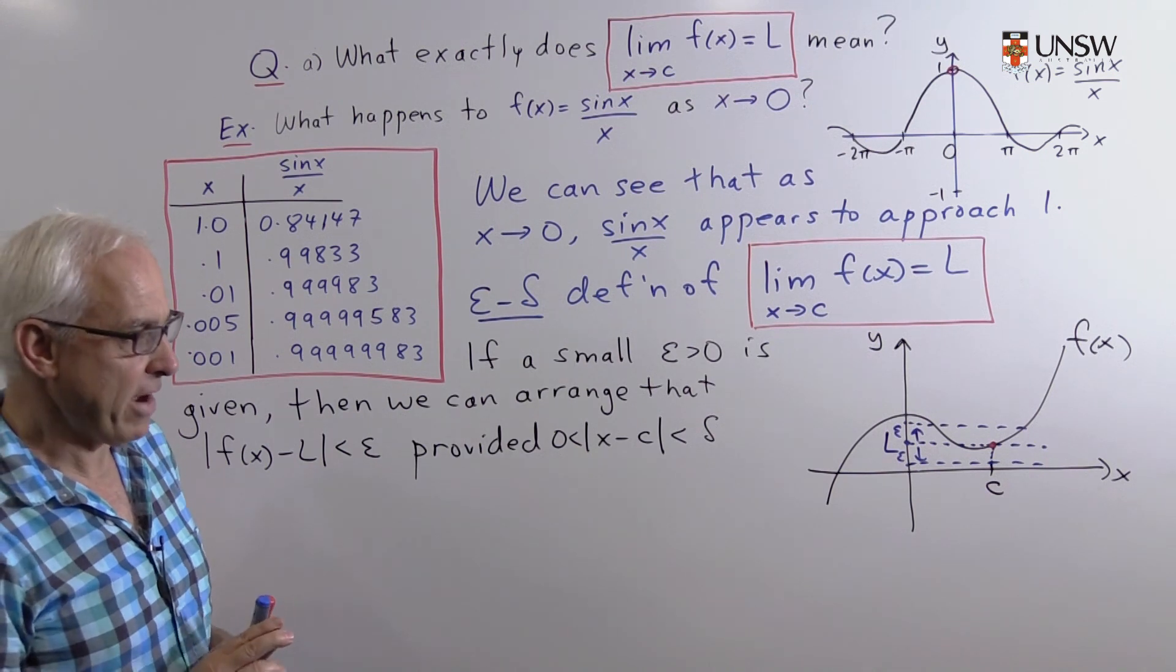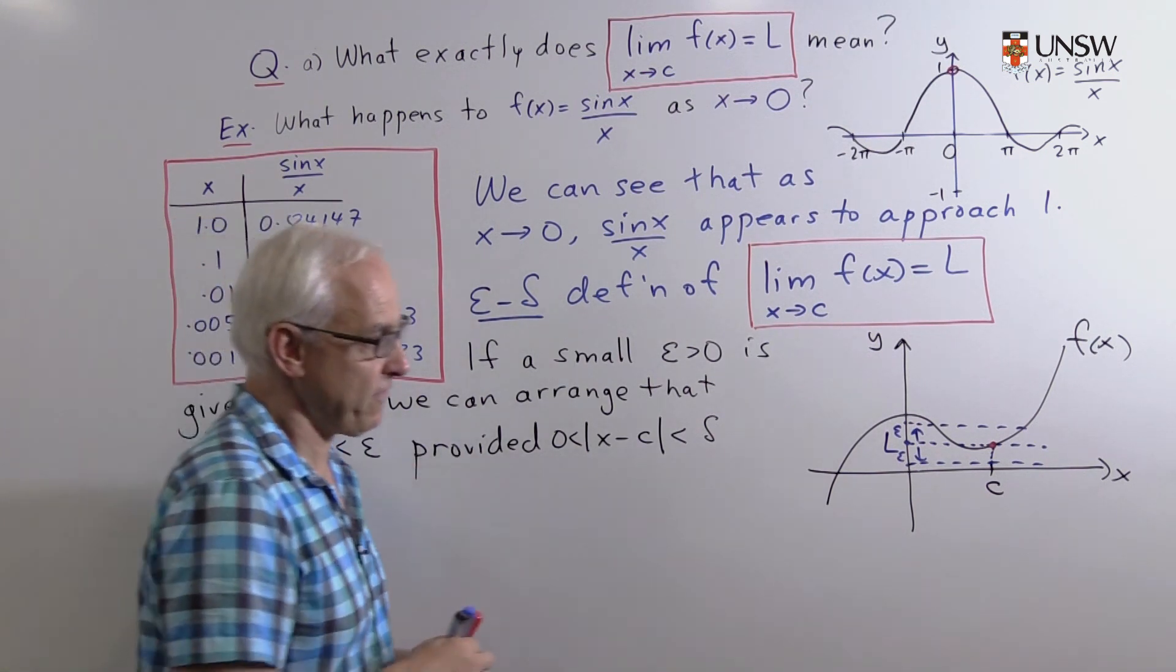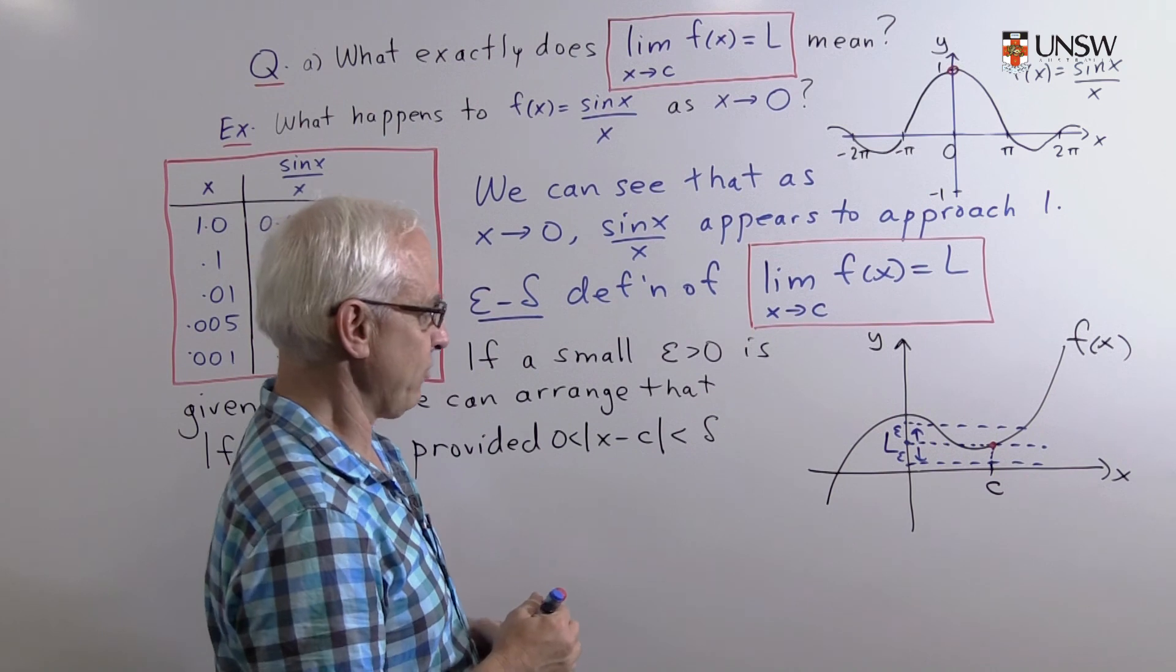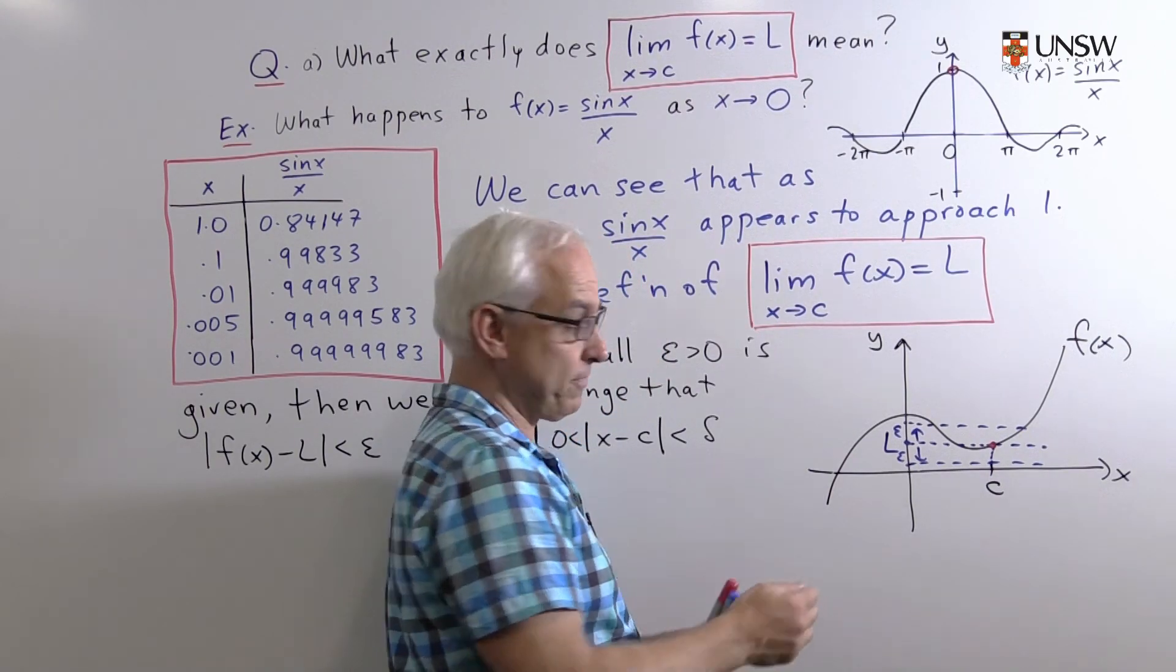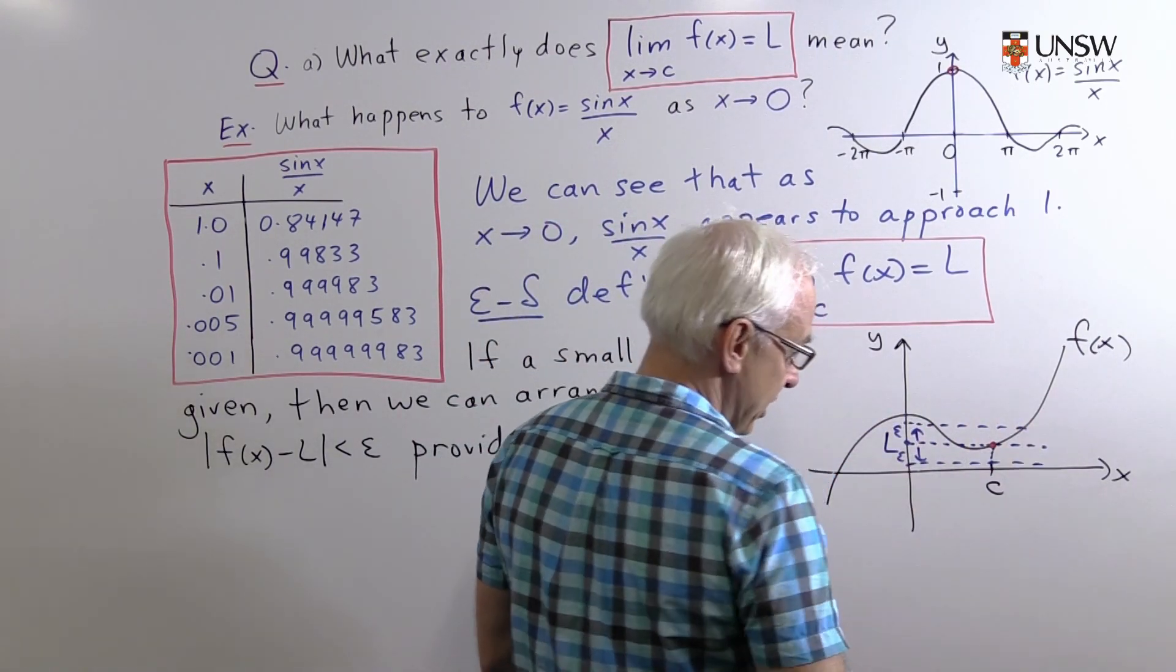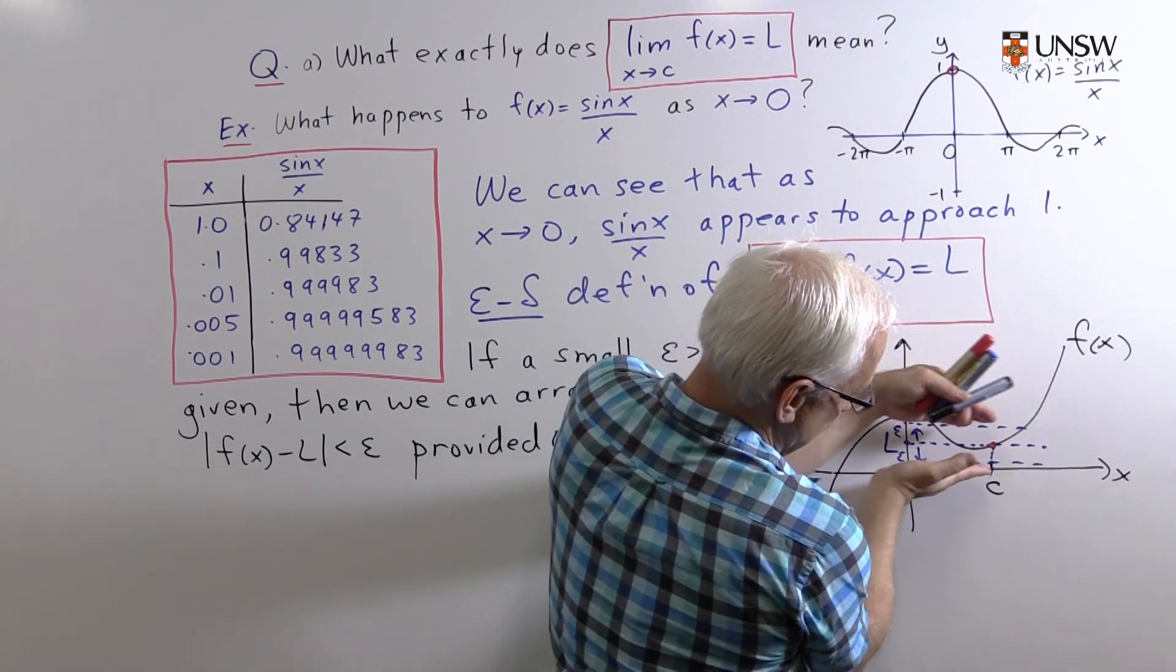In this particular diagram, how could we find a delta that makes this work? Let's have a look. Here's the graph of the function. Suppose we want this function to be within this band.